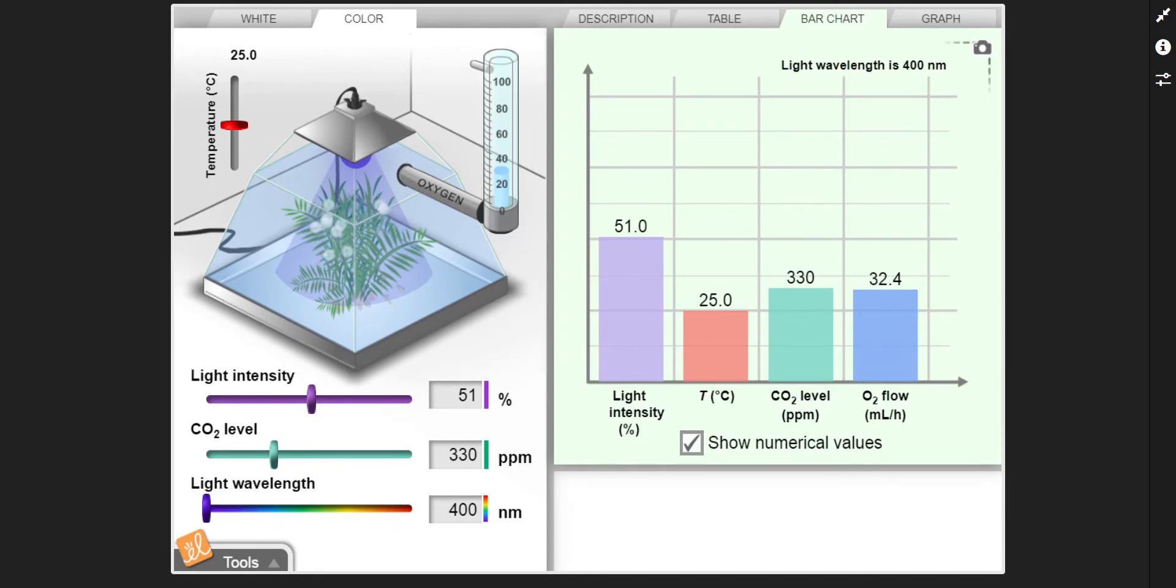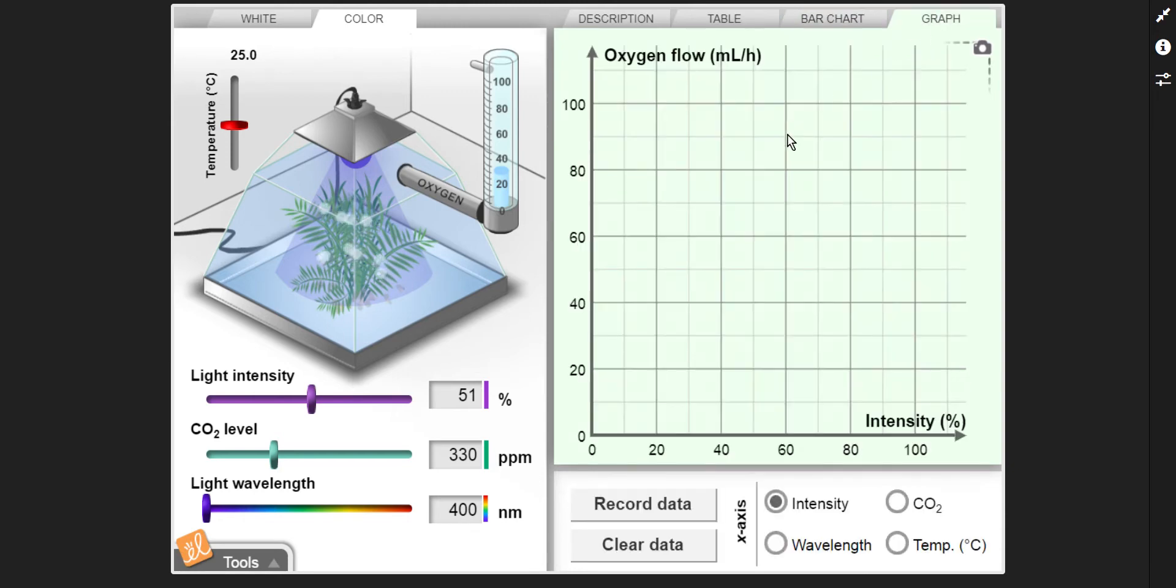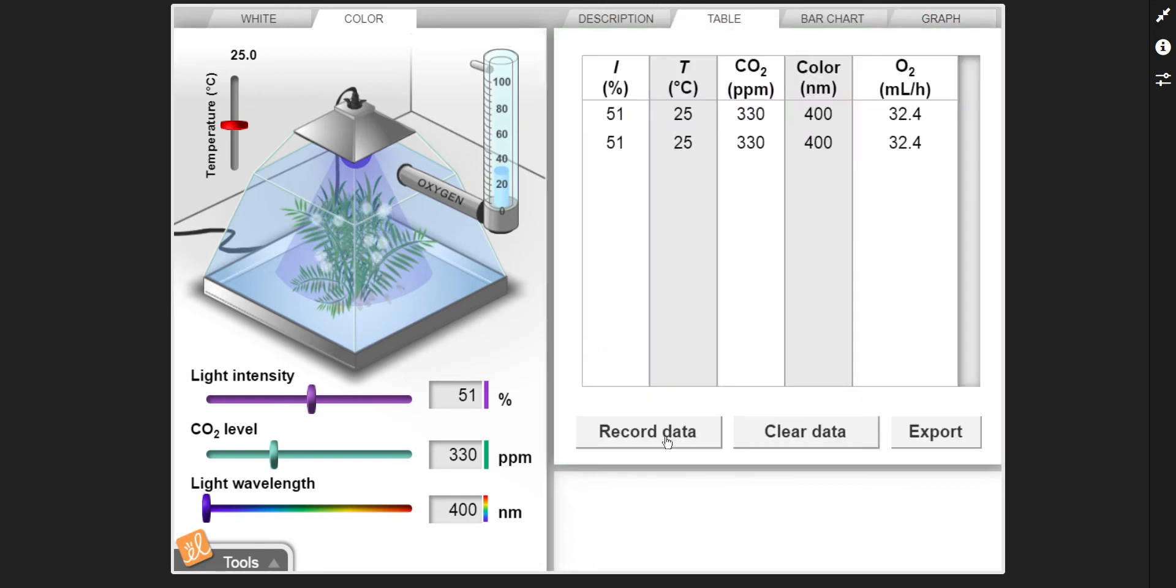All right. Now what it's asking us is to set the visible to 400. And then what it wants us to do is go to the graph and you're going to hit record data. Oh, sorry. Let's go to the table. Record data. That way you can see it all.